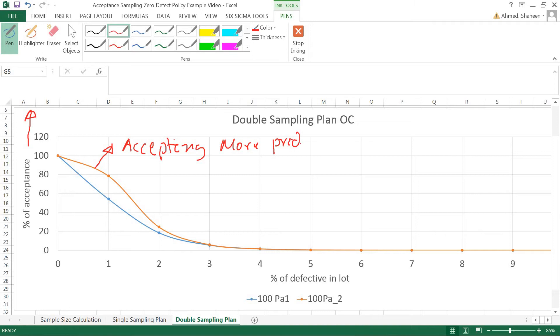You will be sending more products to the market, so as a manufacturer you are minimizing your risk by reducing the alpha value. When you accept more product, you send it to the market and your customer takes the risk. So you decrease the alpha by the sacrifice of increasing the beta.